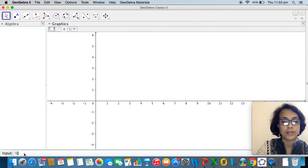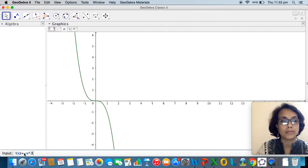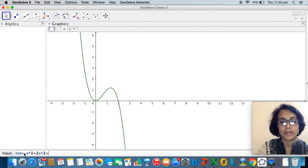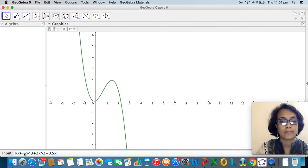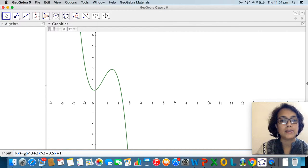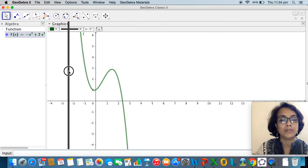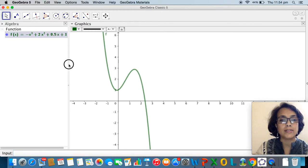In the input bar I am going to input the function f(x) equals minus x cubed plus 2x squared plus 0.5x plus 1, and when I press enter GeoGebra feeds this into the algebra window and I can see the graph as well.